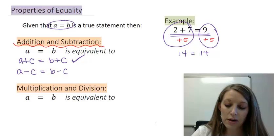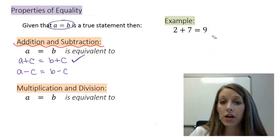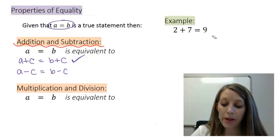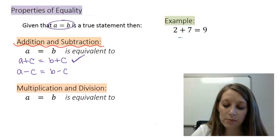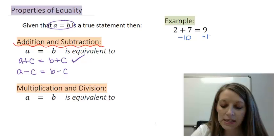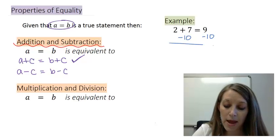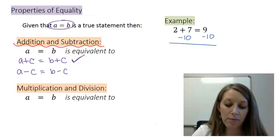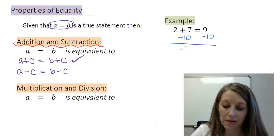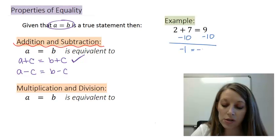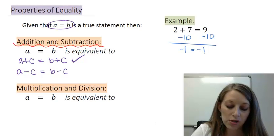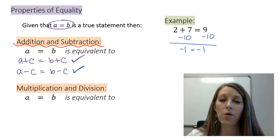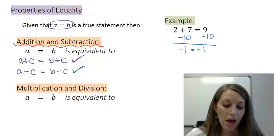So let me start over now, but let me subtract something from both sides. So starting with the same equation, 2 plus 7 equals 9. If I subtract 10 from both sides, I will once again remain with a true equation. 2 plus 7 minus 10 gives me negative 1. On the left and on the right, 9 minus 10 also gives me negative 1. So we can see that this subtraction property is also a true property.